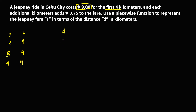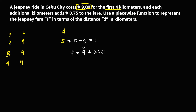But if the distance is 5 kilometers, there is an additional 0.75 for every kilometer. To compute for the total fare when the distance is greater than 4 kilometers: 5 minus 4 equals 1, so we have an additional 1 kilometer. The fare is 9 pesos plus 0.75 times 1.